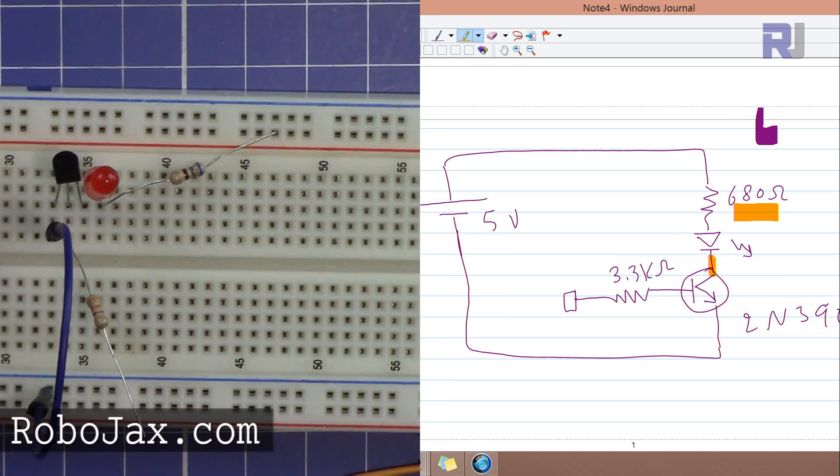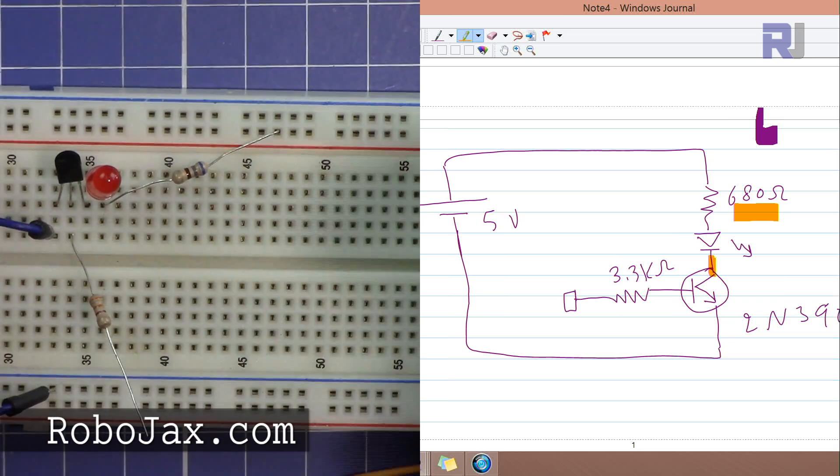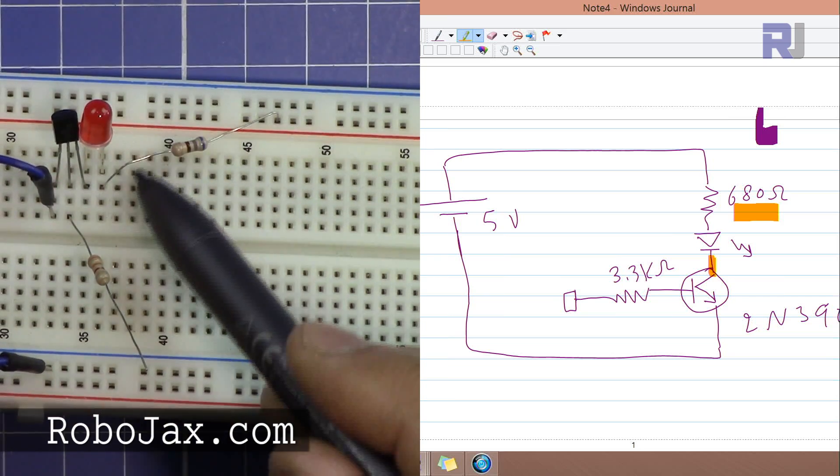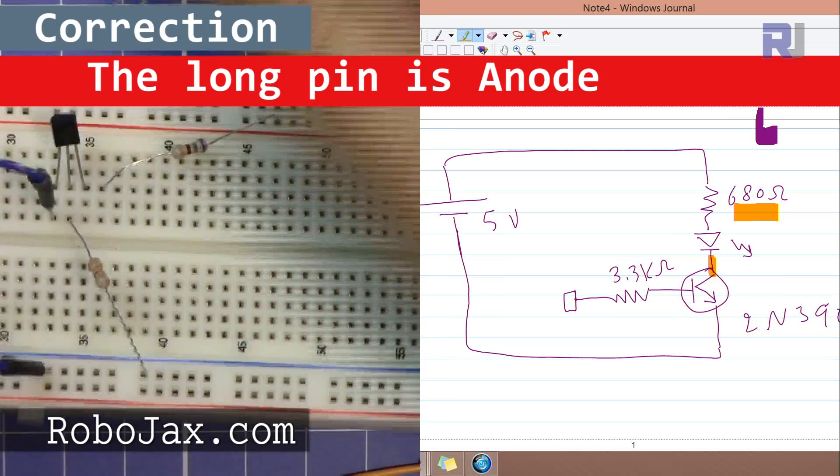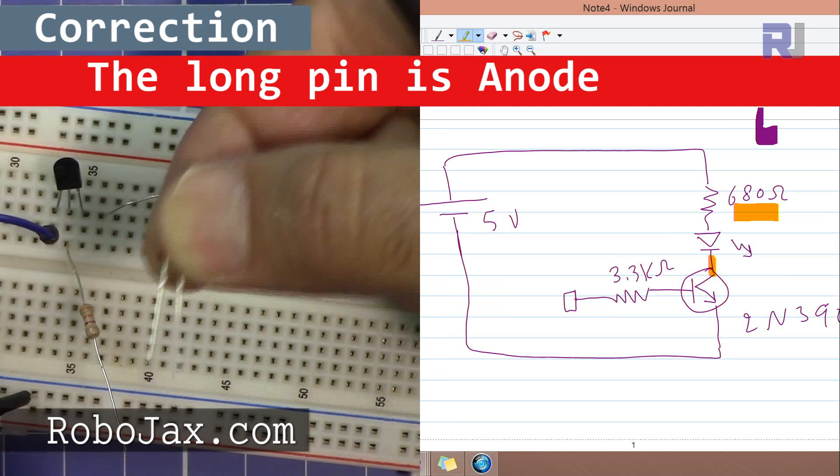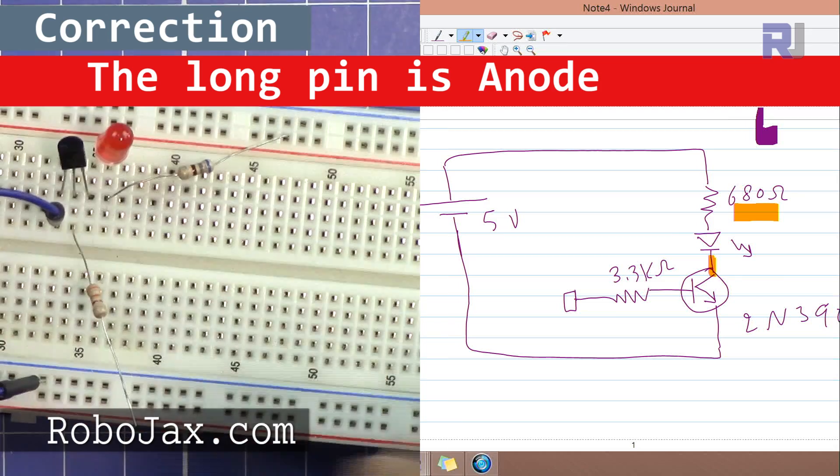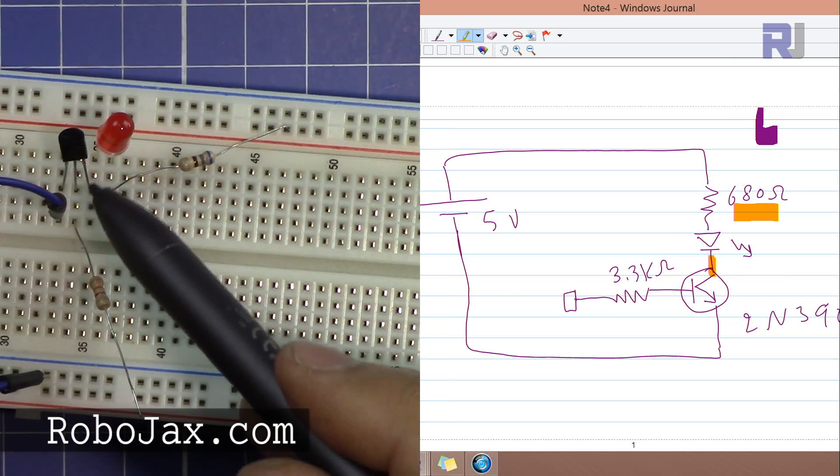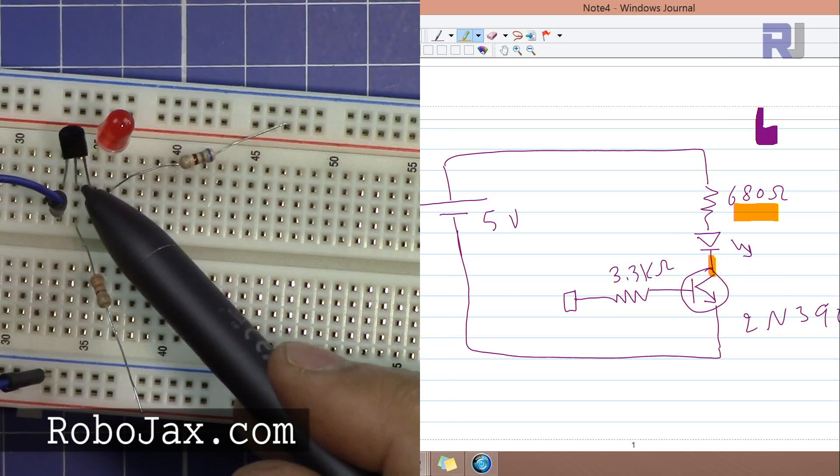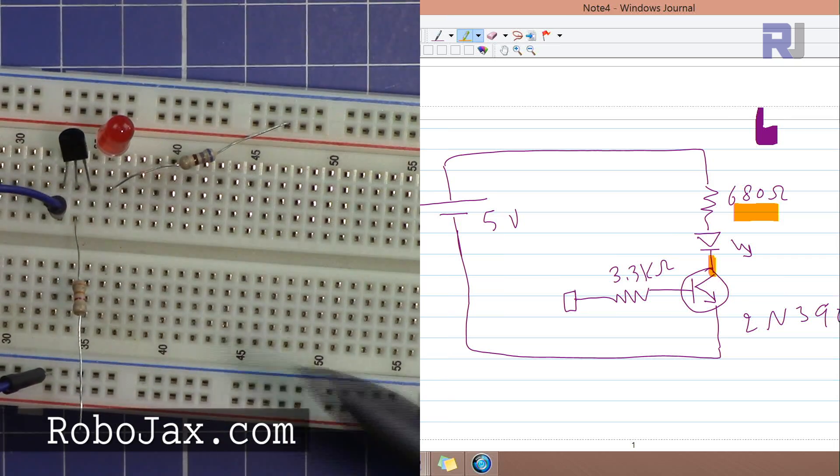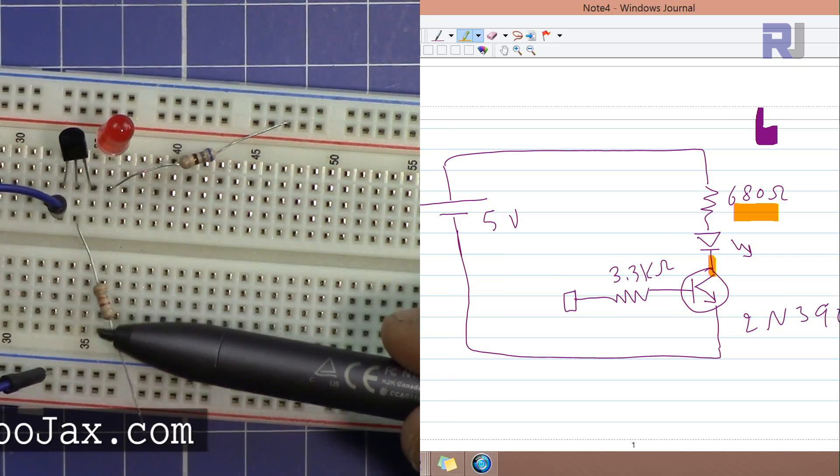From positive through the resistor it goes to the cathode of this LED which is the long one, and then it's connected to the collector of this transistor. Emitter is connected, and this is the base. Base is connected to this resistor that you see here.